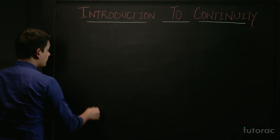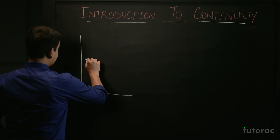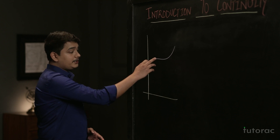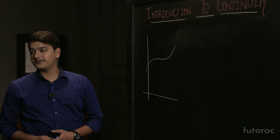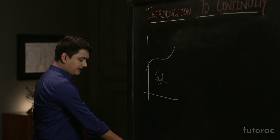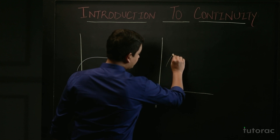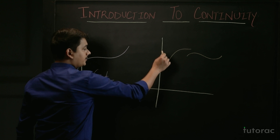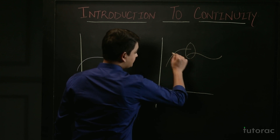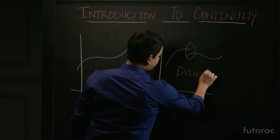Suppose if you draw a graph and you don't need to lift your pencil — you are drawing continuously without breaking the flow of the curve — then the function is classified as a continuous function. But if you are drawing another graph and the graph breaks at some point, meaning you had to lift your pencil up, then this type of function is called a discontinuous function.